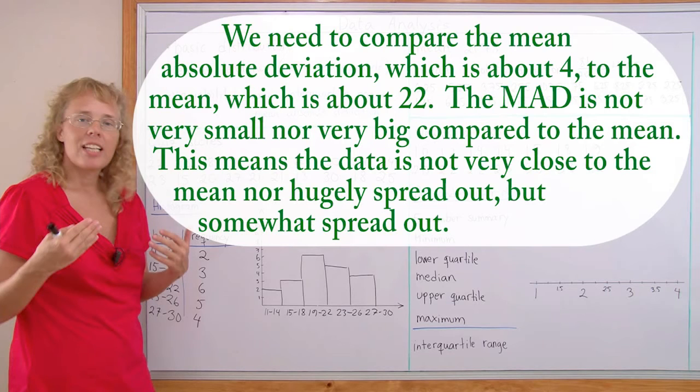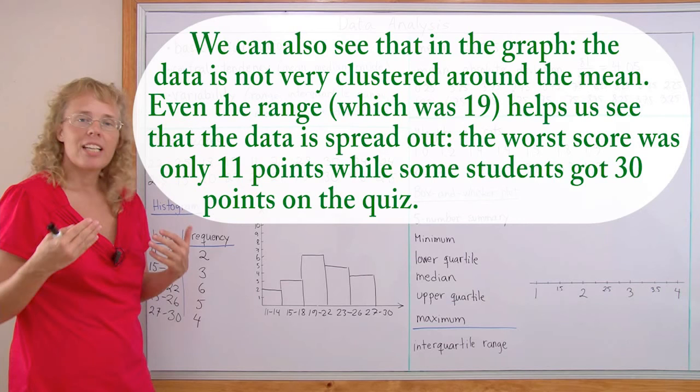And we need to compare the mean absolute deviation which is about 4 to the mean which is about 22. The mean absolute deviation is not very small nor very big compared to the mean. Because 4 compared to 22, 4 is not a very small number compared to 22. You know, 1 would be or less than 1 would be very small. And it's not a very big number compared to 22. So this means that data is not very close to the mean. It's not very compacted around the mean. Nor is it hugely spread out. But it's somewhat spread out. We can also see that in the graph. The data is not very clustered around the mean. And even the range, which was 19, it was 30 minus 11 equals 19. The range helps us see that the data is spread out. The worst score was only 11 points, while some students got 30 points on the quiz.